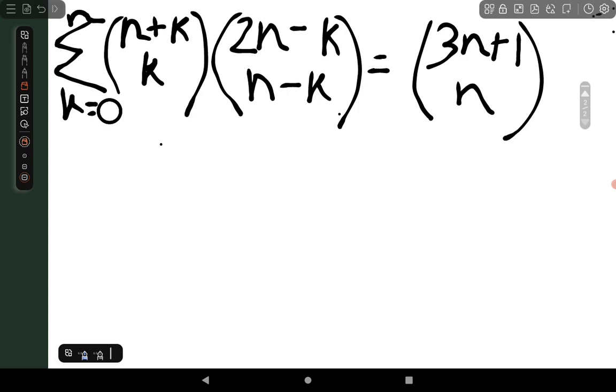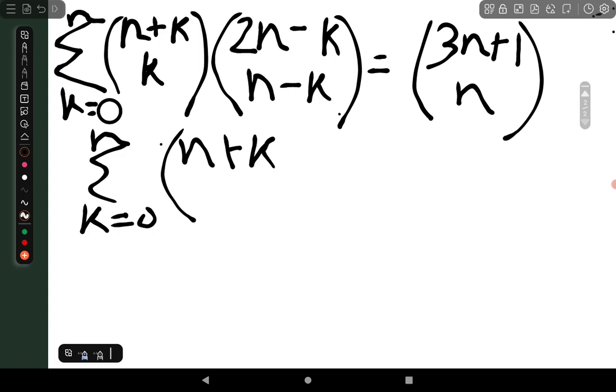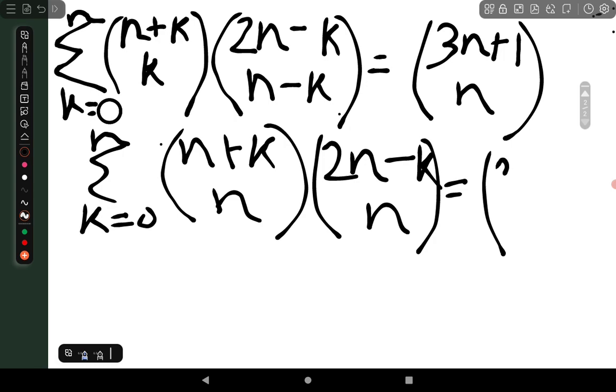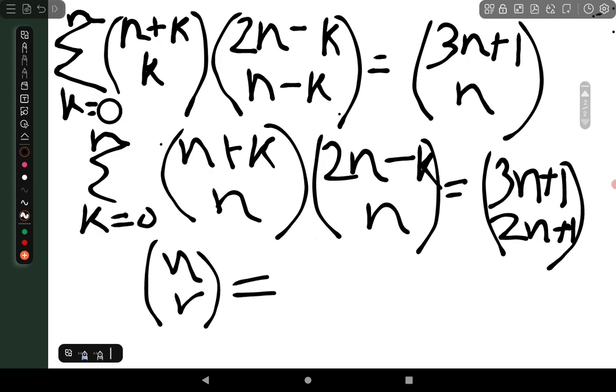This statement is equivalent to summation over k equals 0 to n, n plus k choose n into 2n minus k choose n equals 3n plus 1 choose 2n plus 1. Here I am using just the property that n choose r equals n choose n minus r, nothing else.